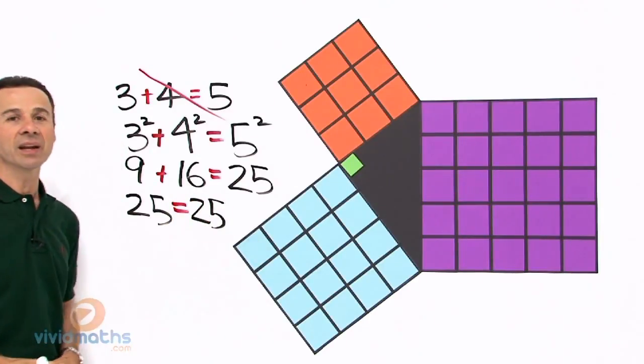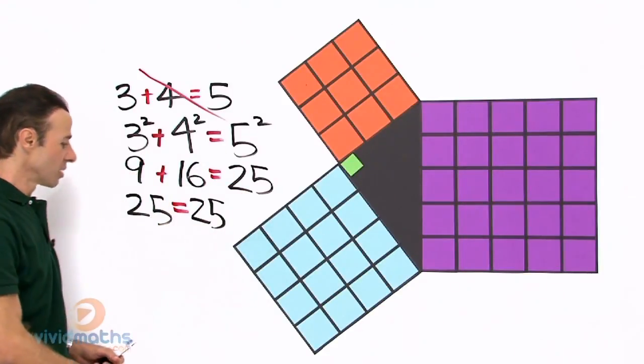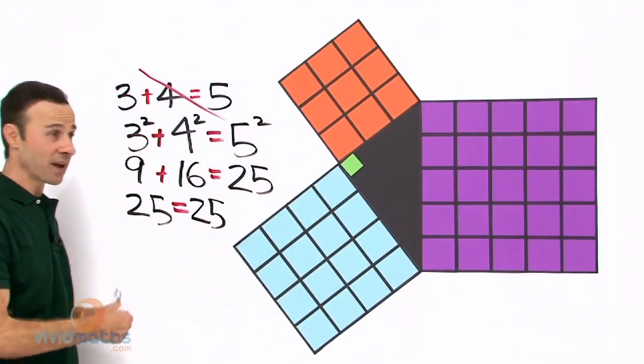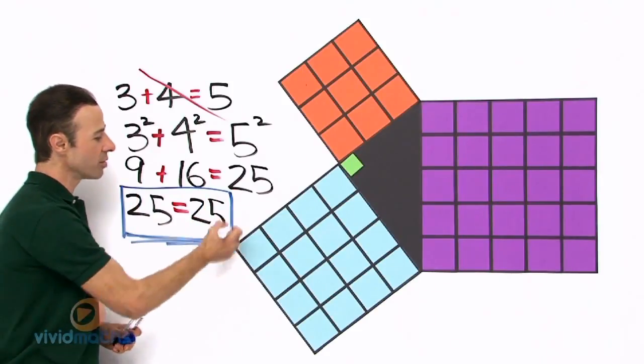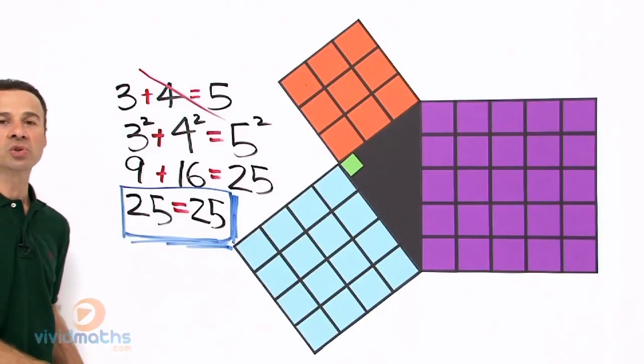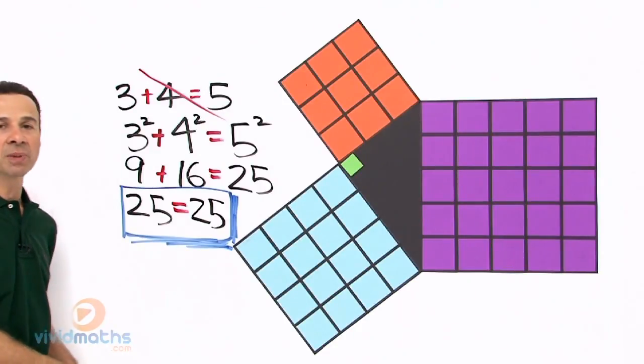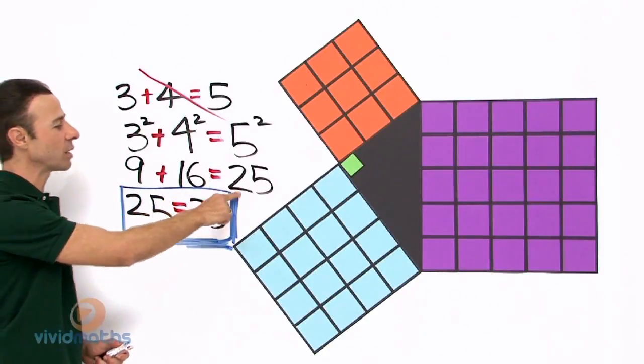So isn't that interesting - when we square each number it actually holds true. So 25 does in fact equal 25. So Pythagoras' theorem actually holds true. Now let's see how it holds true visually up here displayed in the picture. So let's have a look here - we have 9 and 16 equaling 25.